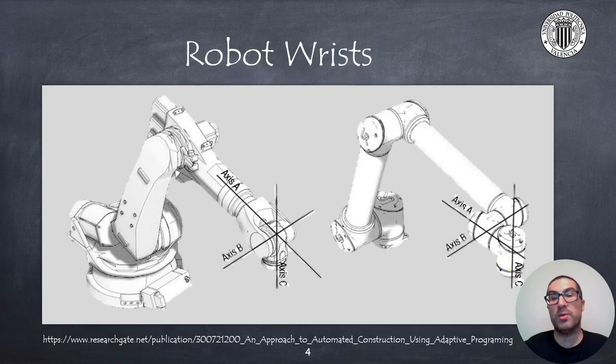Robot manipulators typically have a spherical wrist, like the one shown in the figure on the left. In this type of wrist, the three last axes intersect in a point, known as the wrist point. On the other hand, collaborative robots implement a different type of wrist, where axes B and C are separated by a distance.